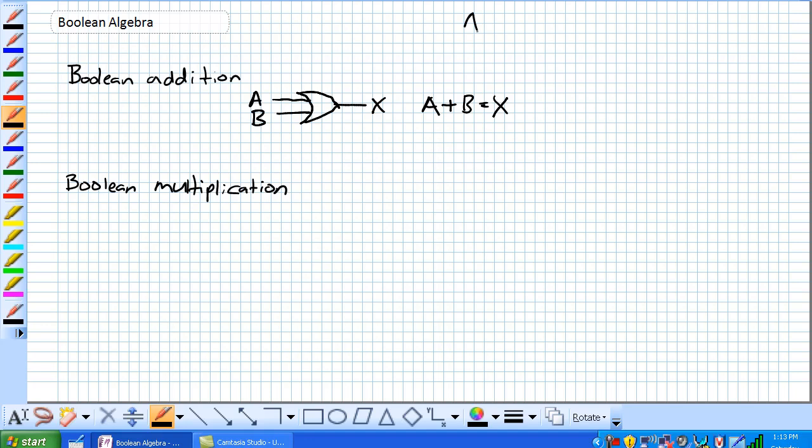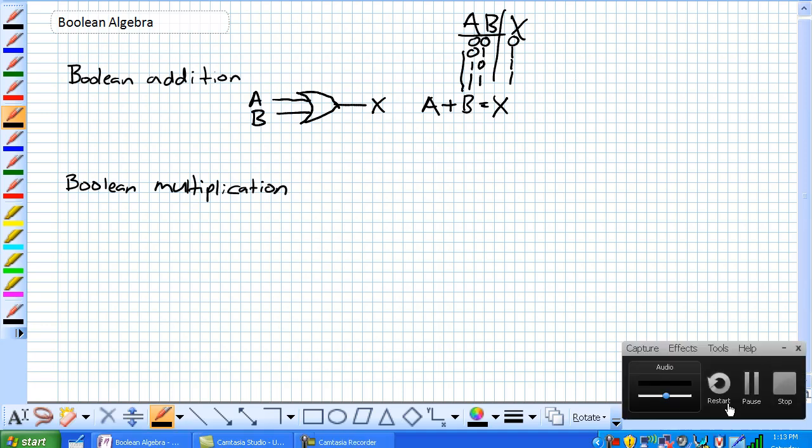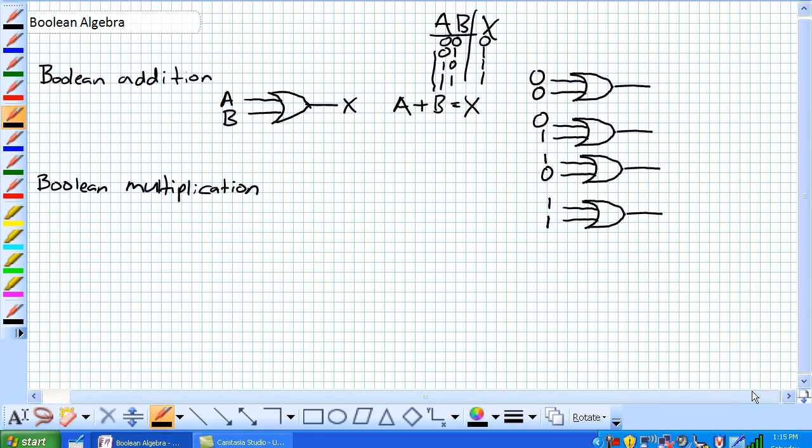Given our truth table of OR, we would expect Boolean algebra to have a 1 any time that there's a 1 in the inputs. Given this right here, we would expect our outputs to be 0, 1, 1, 1.